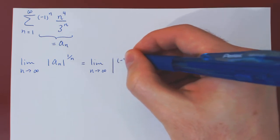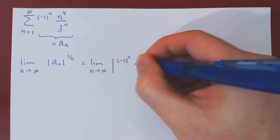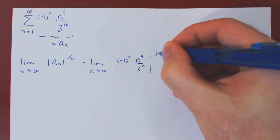a_n is simply negative 1 to the n, n to the 4 over 3 to the n, to the power 1 over n.